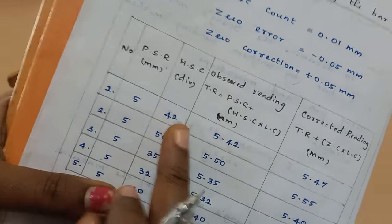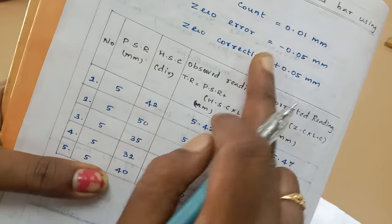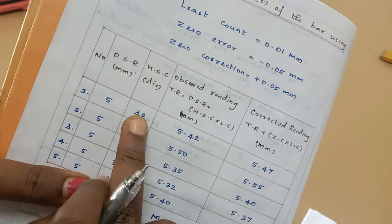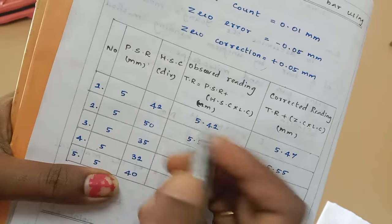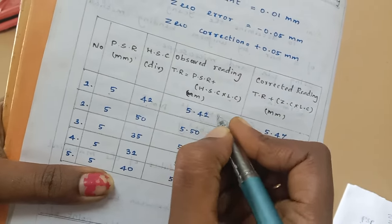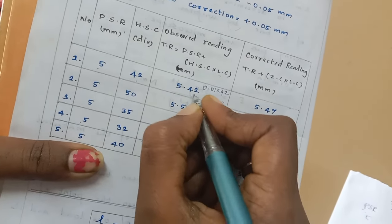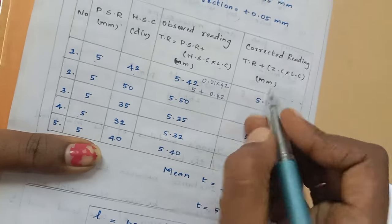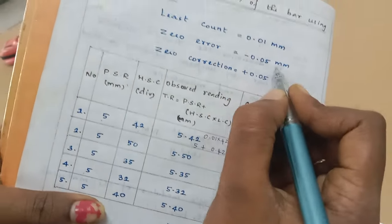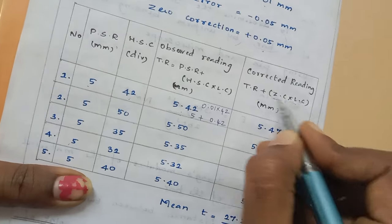For example, you can see this reading. Pitch scale reading is 5. Head scale coincidence is 42. We multiply 0.01 and 42. If we add these two: 5 plus 0.42 equals 5.42. The error is minus 0.05, the correction is plus 0.05. The observed reading is 5.42.